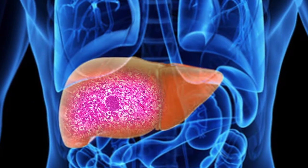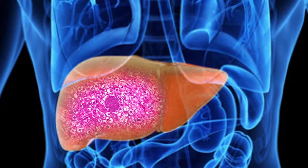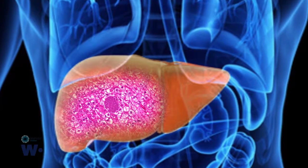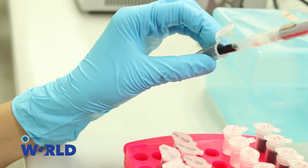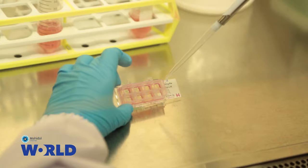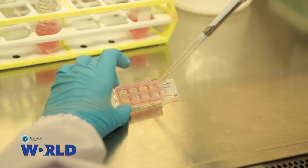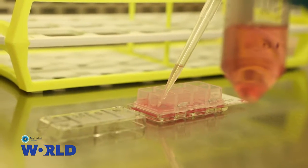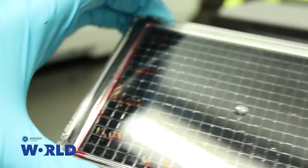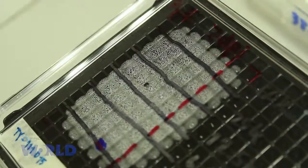The only way to find out is to grow VIVAX in human liver cells. Therefore, the research was conducted by harvesting parasites from mosquitoes that fed on the blood of VIVAX patients. Then we can study the growth of Plasmodium VIVAX in human liver cells that have been cultured in vitro in the laboratory. We work in collaboration with many scientists all over the world.